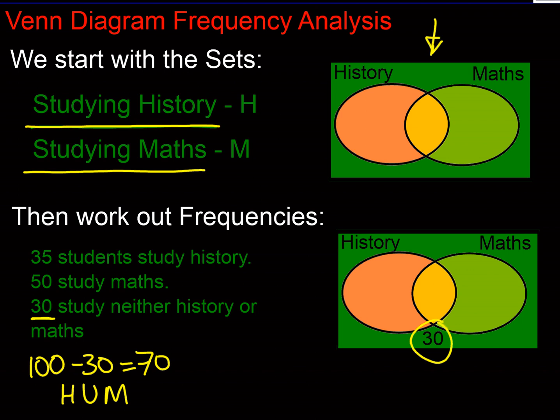How can we use these other two figures? There's 35 students doing history and 50 studying maths. If they were different students, that's 85 students, but that's a mismatch from the 70 we worked out earlier. So that means 15 must be doing both, and they're double counted.